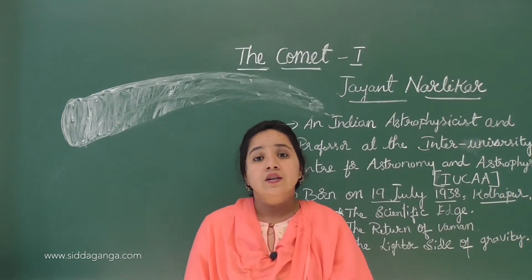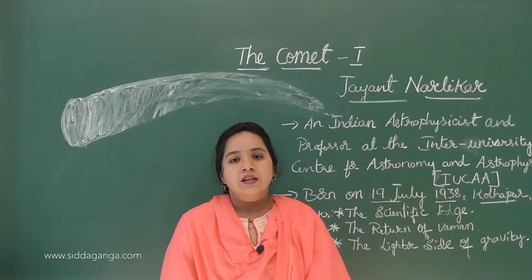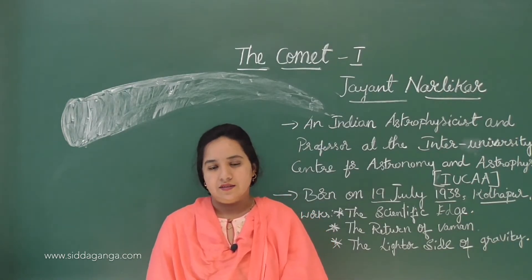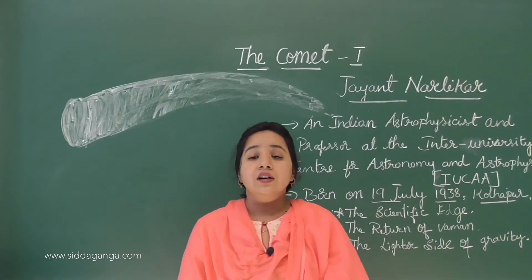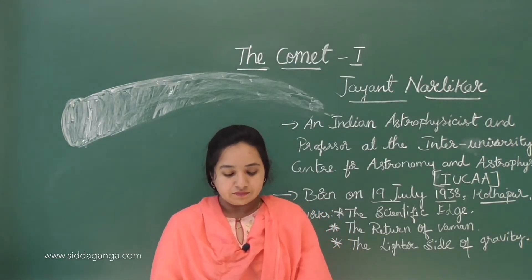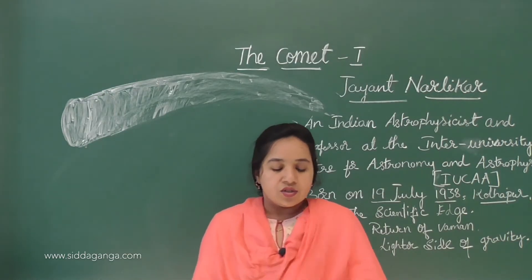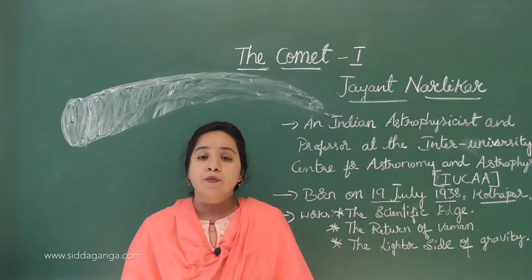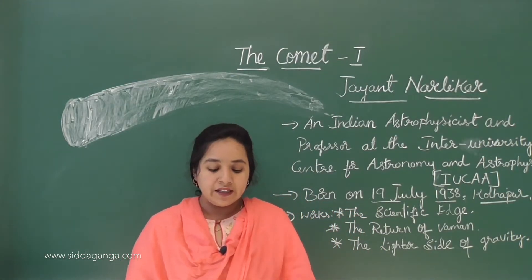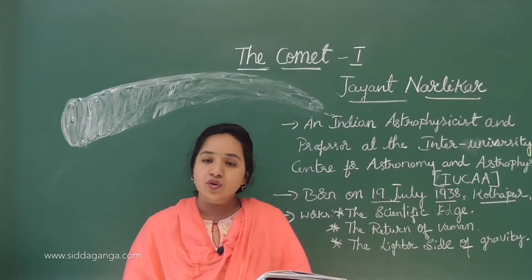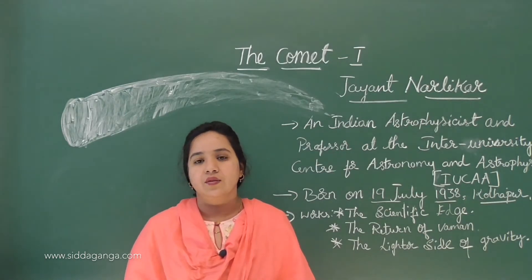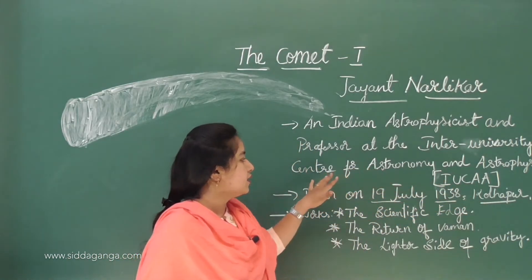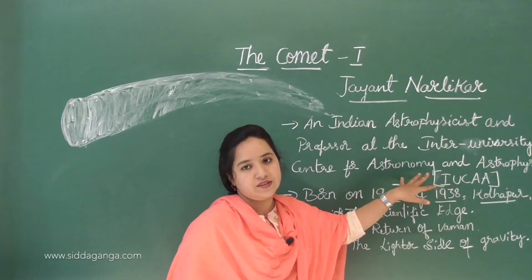Today I am going to deal with Comet First. This story was written by Jayant Narlikar. Let's see about the writer's introduction. Jayant Narlikar is an Indian astrophysicist and also a professor at the Inter-University Centre for Astronomy and Astrophysics — that is IUCAA.